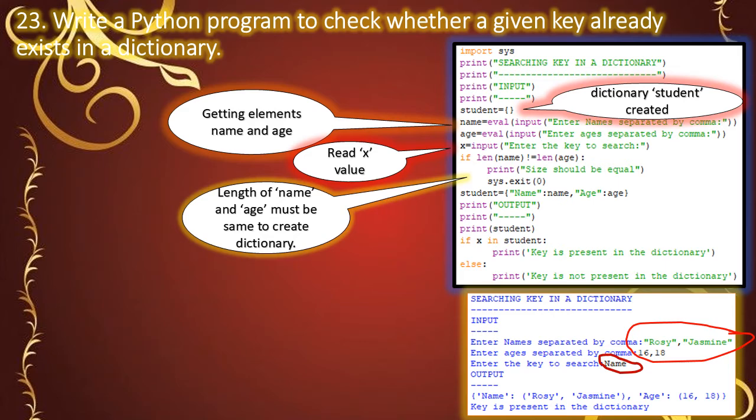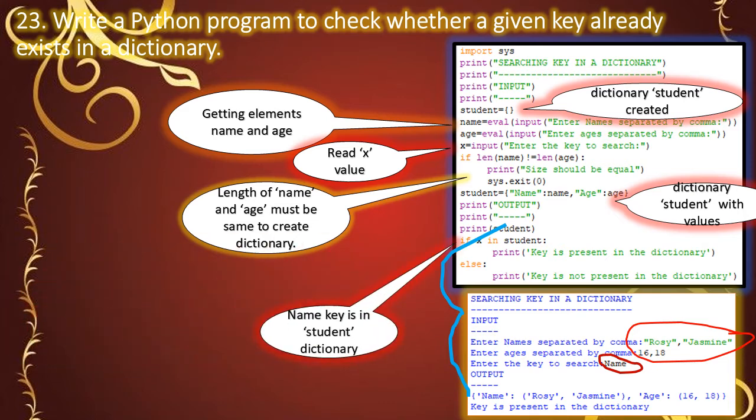We check that the lengths are equal, then assign the values to their respective keys in the student dictionary and print it. Next, we check if x in student, where x equals 'name'. If the key is present, it displays 'Key is present in the dictionary', otherwise 'Key is not present'. Since 'name' is present in the student dictionary, the output is 'Key is present in the dictionary'.